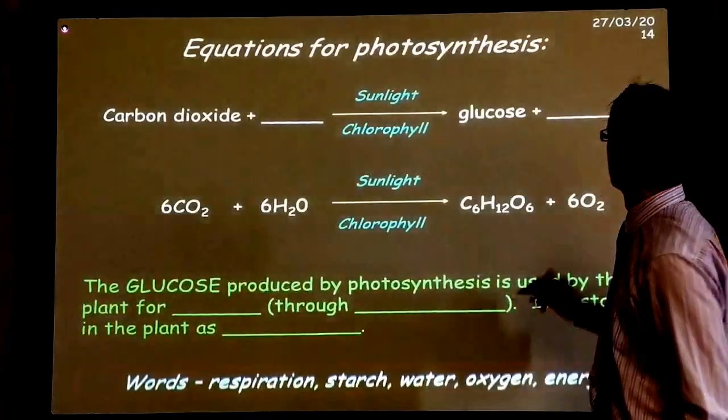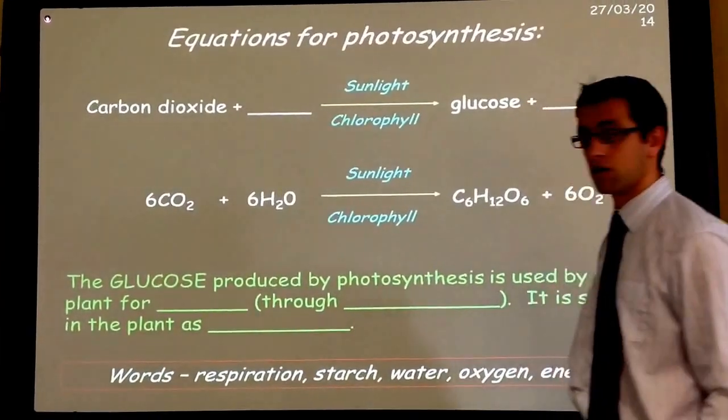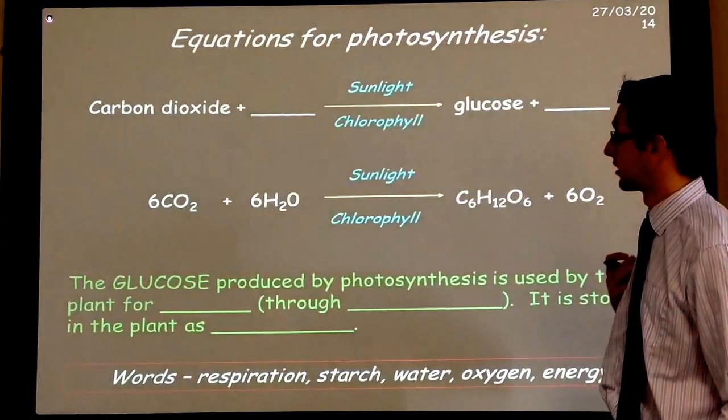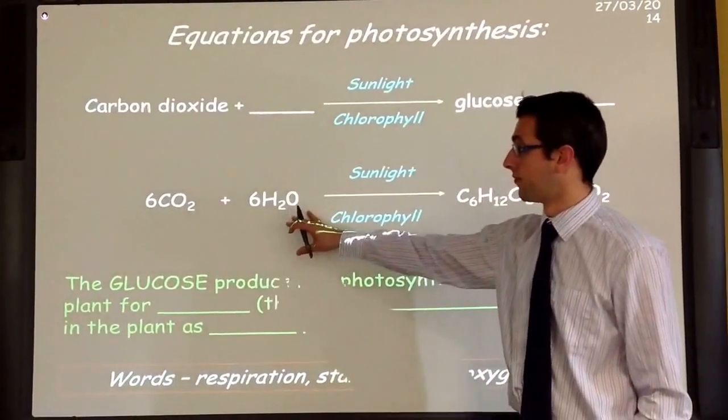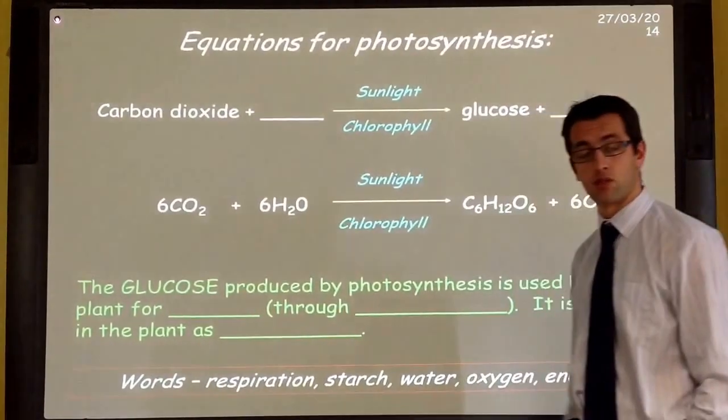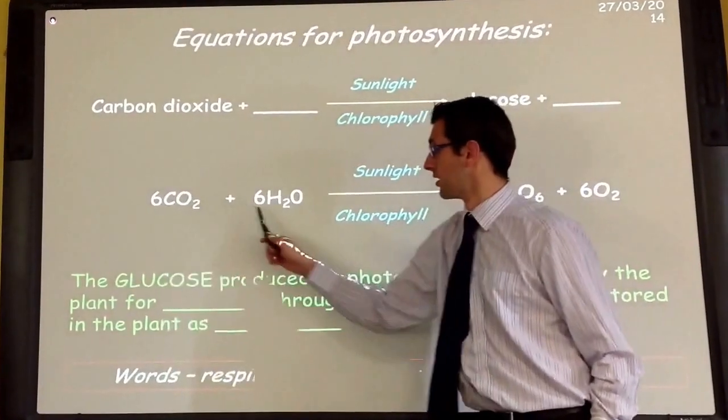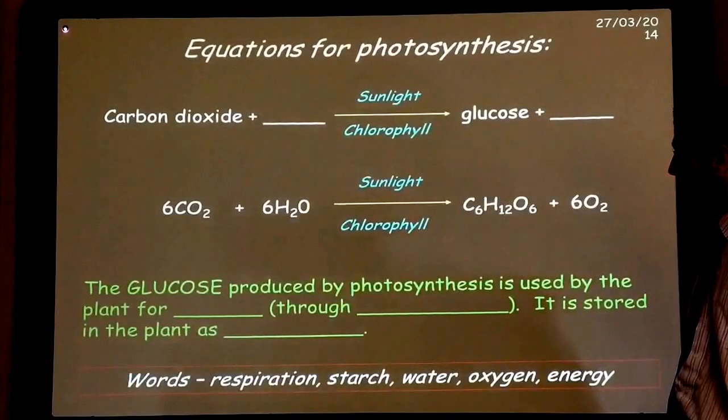So carbon dioxide plus water are going to give glucose plus oxygen coming out the other end and it requires sunlight and chlorophyll. You also need to know the chemical equation for that and make sure you can balance it correctly as well which is quite a simple one with sixes in front of three of the four items.